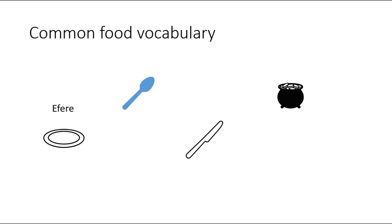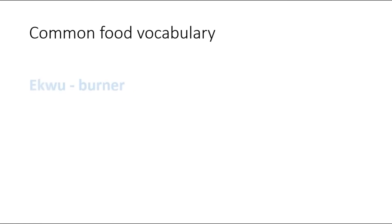Other vocabulary for kitchen items or food: efere — plate. Ite — pot or pan. Ma — knife. Ngaji — spoon. Again: efere — plate. Ite — pot or pan. Ma — knife. Ngaji — spoon.